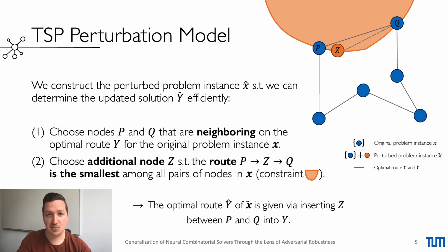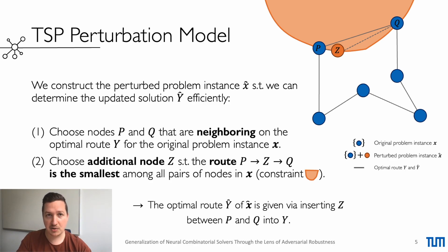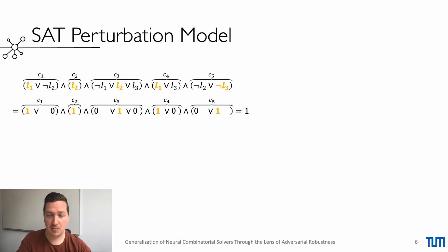Using the construction of multiple types, we can insert multiple nodes. In our paper, we also detail how adding multiple nodes can be parallelized. Another combinatorial optimization problem that we study is the SAT-decision problem. In this task, the neural combinatorial solver predicts if an expression is satisfiable.